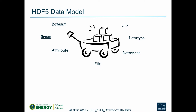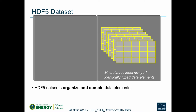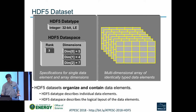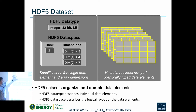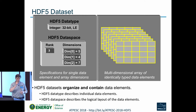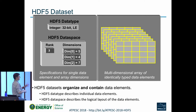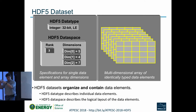The most fundamental thing you probably want to store in HDF5 is your multi-dimensional array, which we call a dataset. Datasets organize and contain your data elements. There are two components: metadata — the specifications about the array — and the array itself, which can be gigabytes, terabytes, as large as you like. The metadata is small, typically hundreds of bytes, to accurately describe whatever your array looks like.